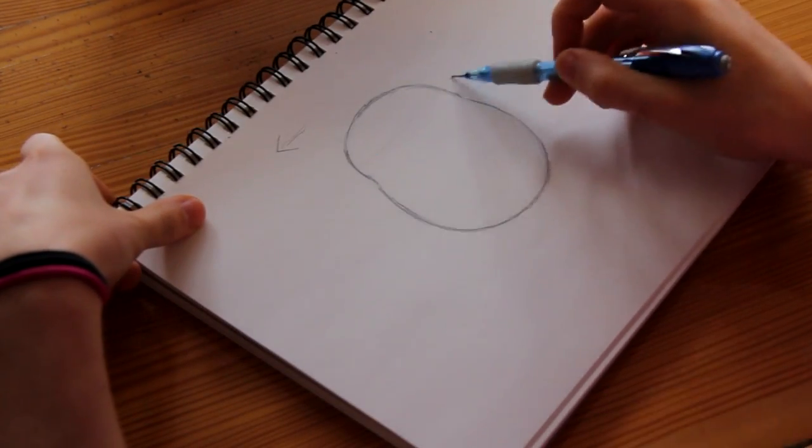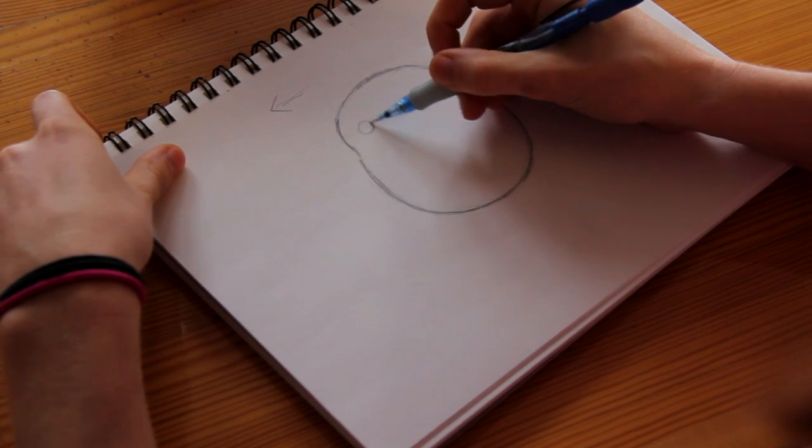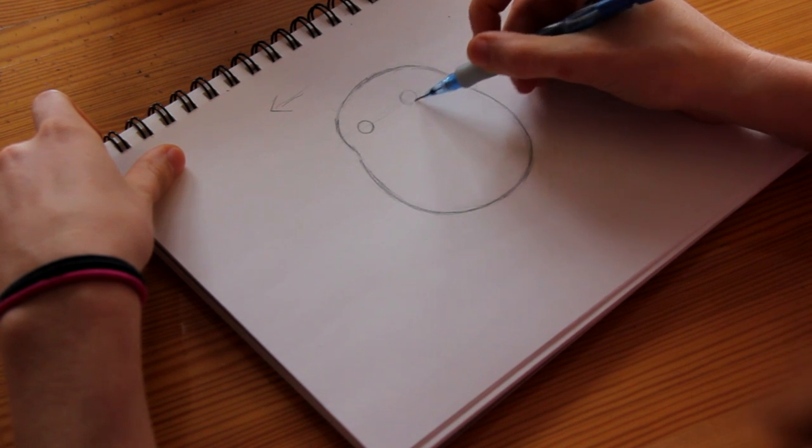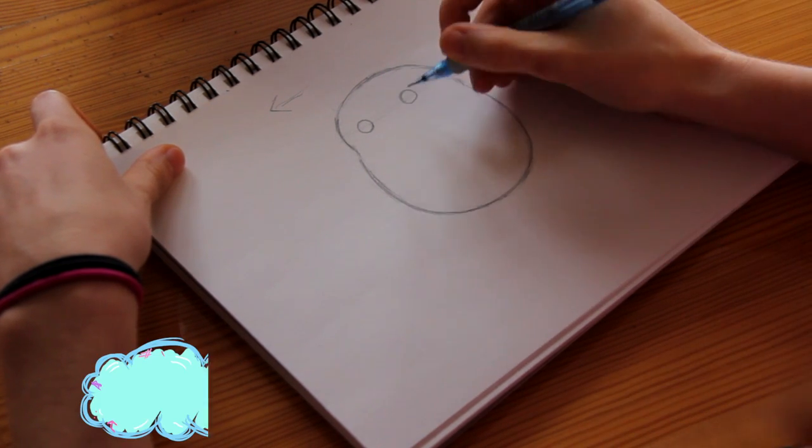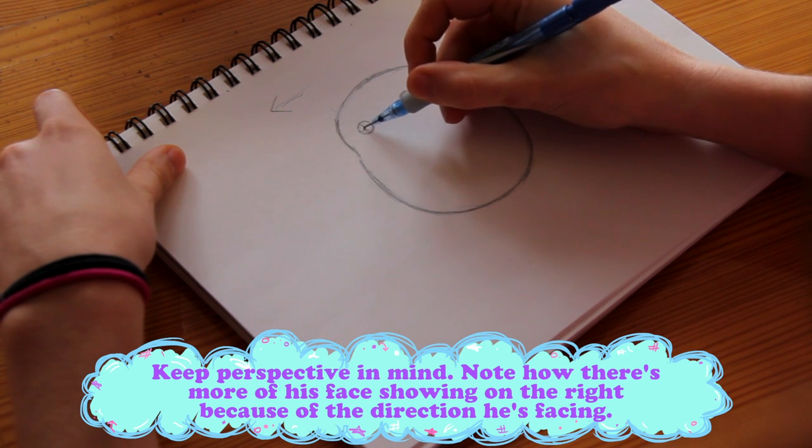Let's go ahead and do his eyes, which will be right around there. And we'll do big black eye number one. These are perfect circles, guys. Again, I'm not the best at drawing perfect circles. Wow, look how scary that looks. Anyway, eye number one.